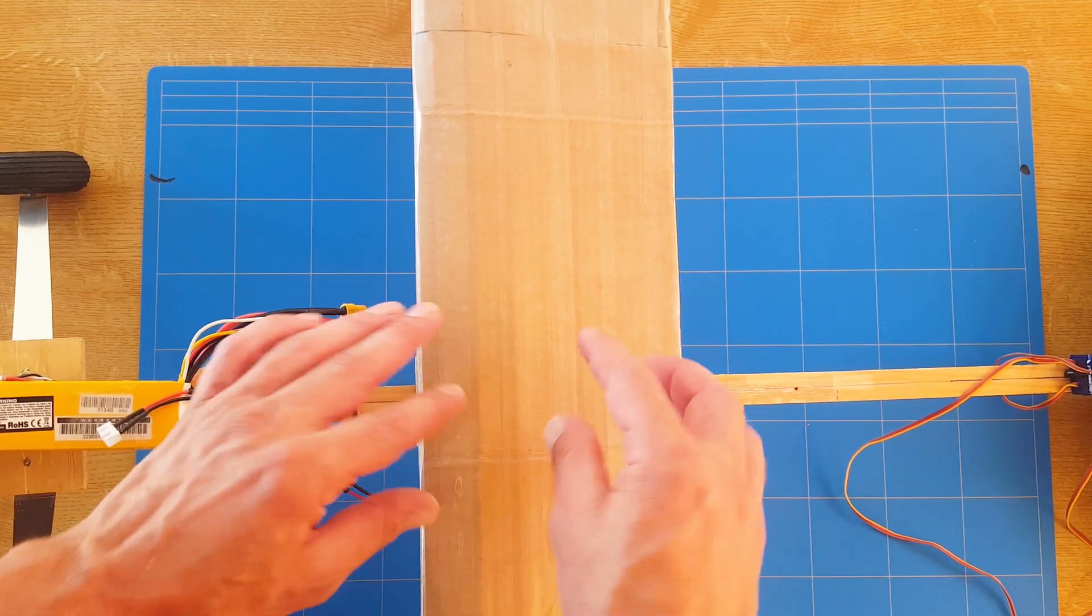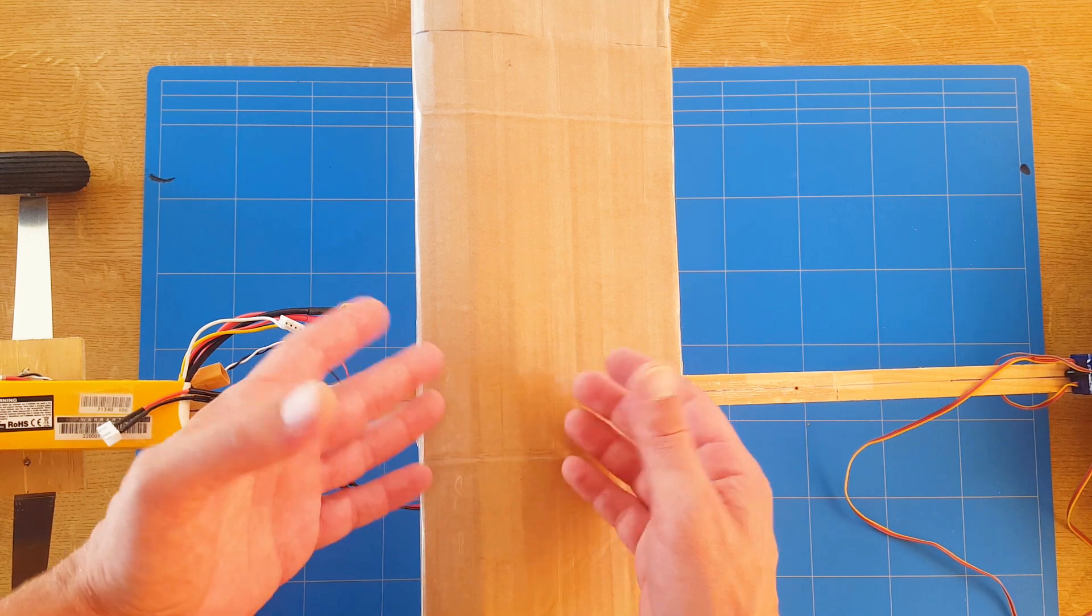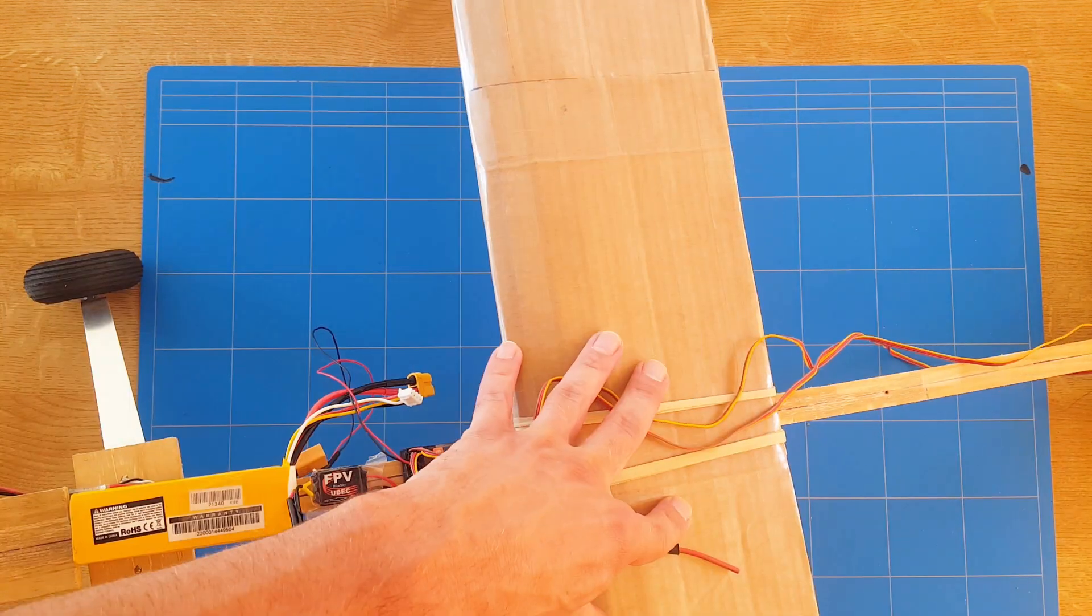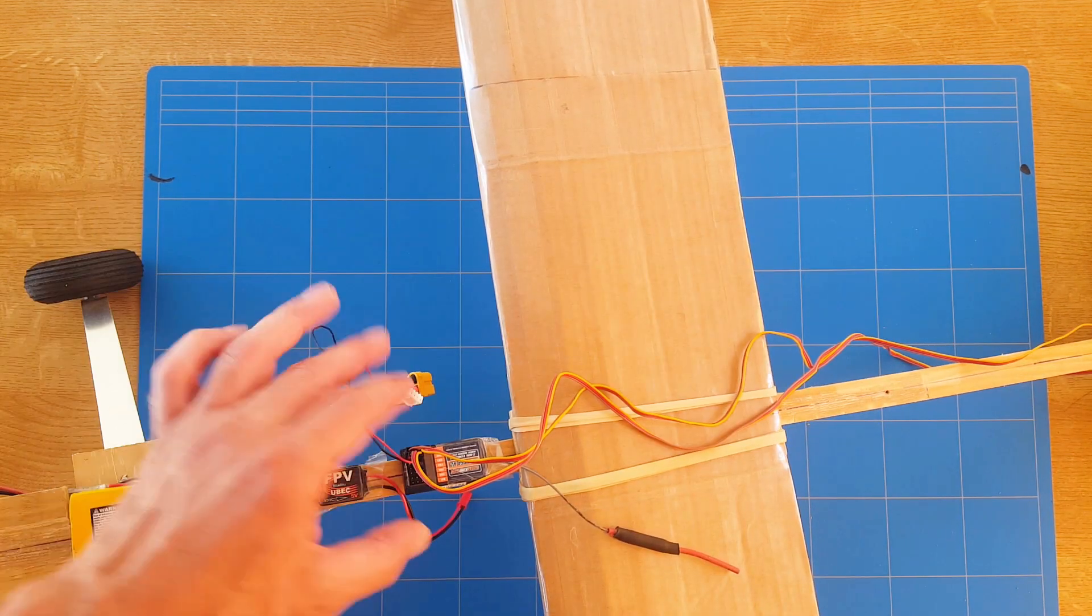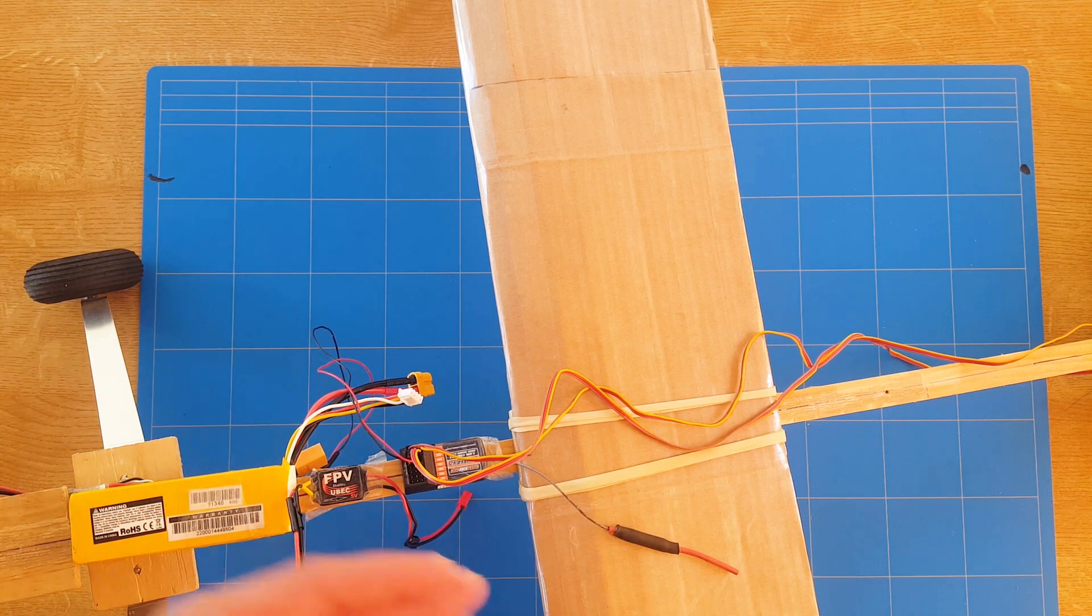Now it's time for the rubber bands to add to the wing as an extra security backup if the double-sided tape decides to let go. Now the wing is in its place. We have to put already the servo wire in the receiver. It's all nice lined up, all ready to go.